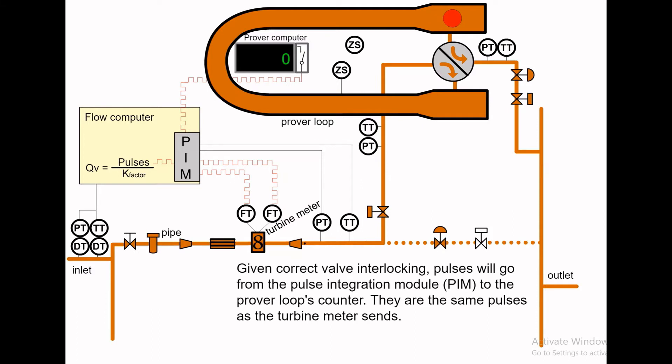Given correct valve interlocking, pulses will go from the pulse integration module, called PIM, to the prover loop's counter. They are the same pulses as the turbine meter sends.